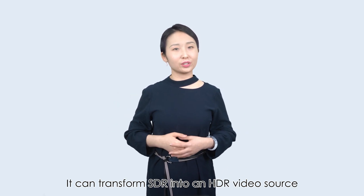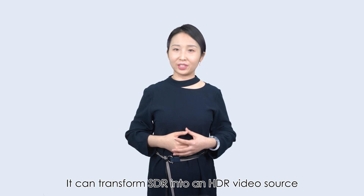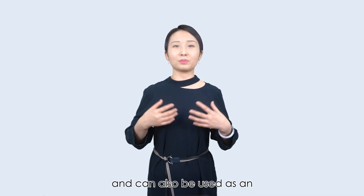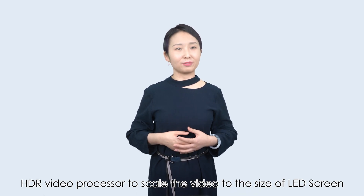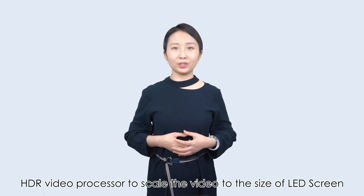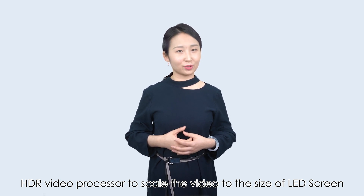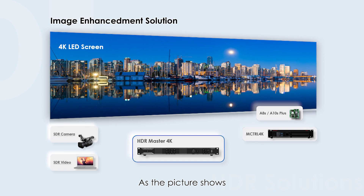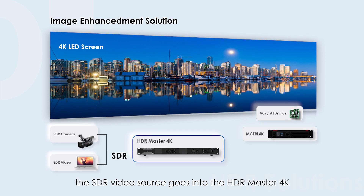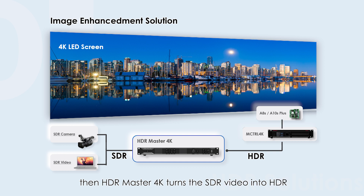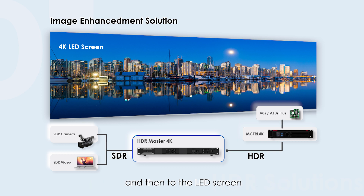That's where the HDR Master 4K comes in. It can transform SDR into an HDR video source and can also be used as an HDR video processor to scale the video to the size of the LED screen. As the picture shows, the SDR video source goes into the HDR Master 4K, then HDR Master 4K turns the SDR video source into HDR, which is transmitted to the controller and then to the LED screen, achieving an HDR result.